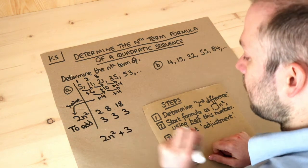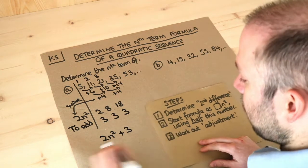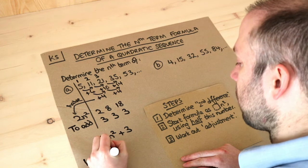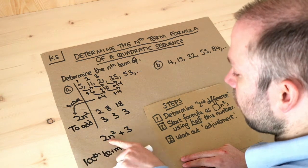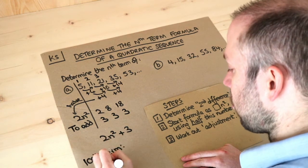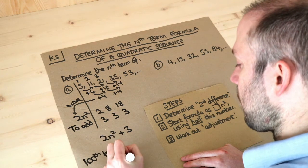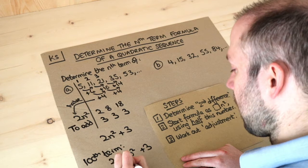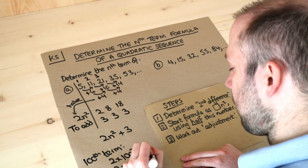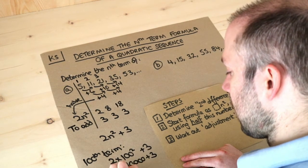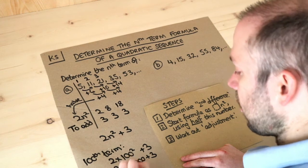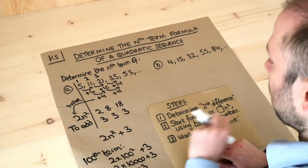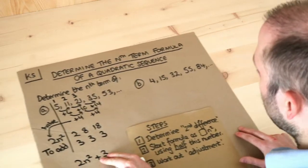Our formula is 2n² + 3. If we want the hundredth term, we substitute n = 100: it's 2×100² + 3 = 2×10,000 + 3 = 20,003. We've found the hundredth term without writing out all one hundred terms.